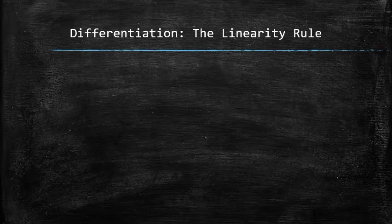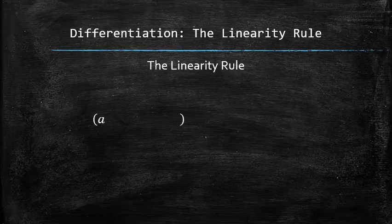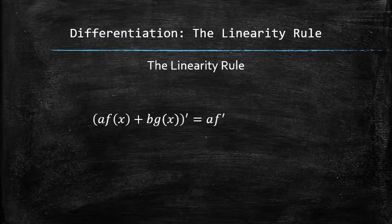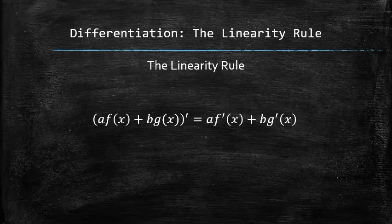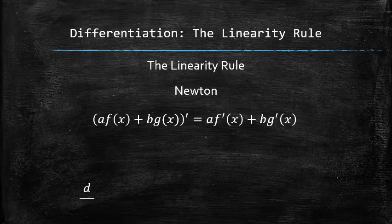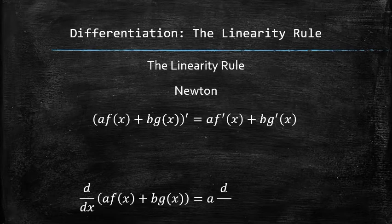Both linearity rules can be combined into a single rule that states that the derivative of a linear combination of two functions is the linear combination of the derivatives of the functions. This is the rule stated in Newton notation and this is the same rule stated in Leibniz notation.